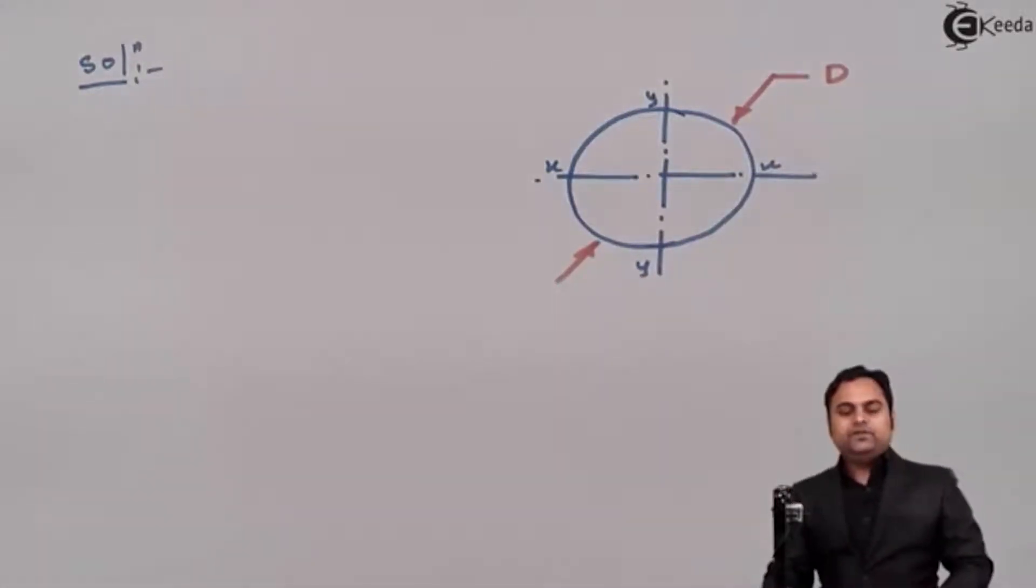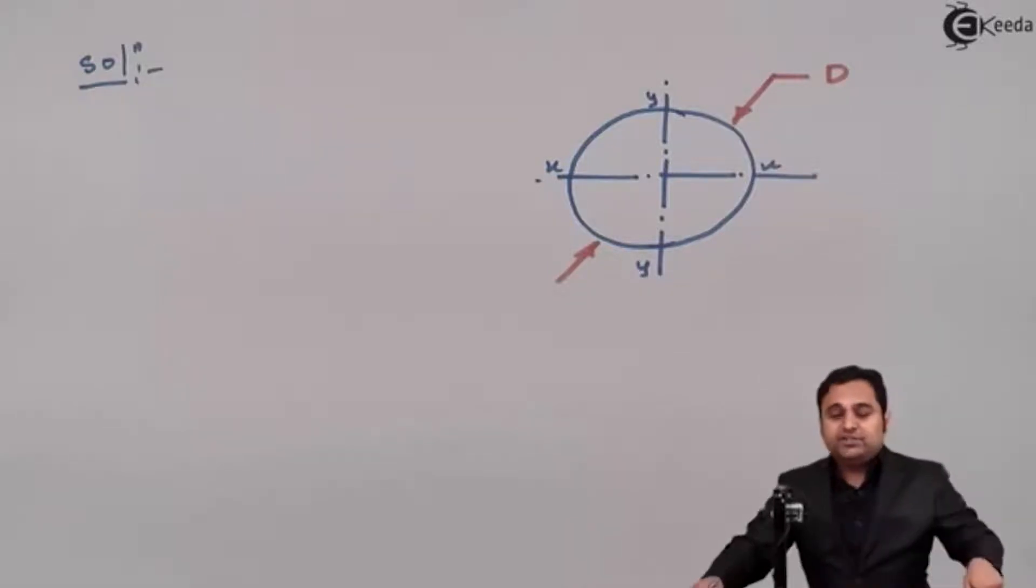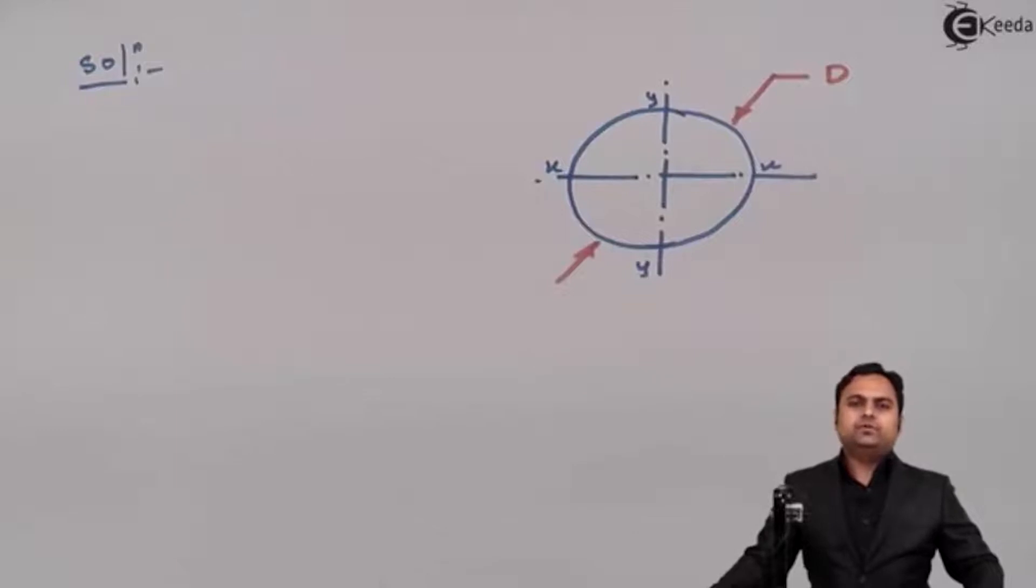Now we have to find out the limit of eccentricity, that is the point at which or the region in which the load is placed so that there is no tension in the section. So whenever the limit of eccentricity is asked in the question, we should go for the no tension condition.